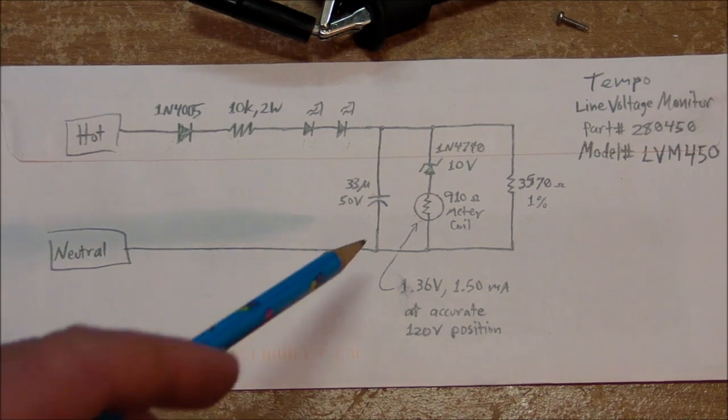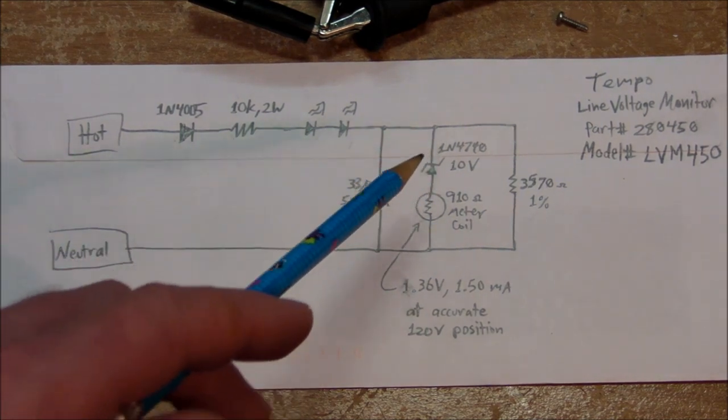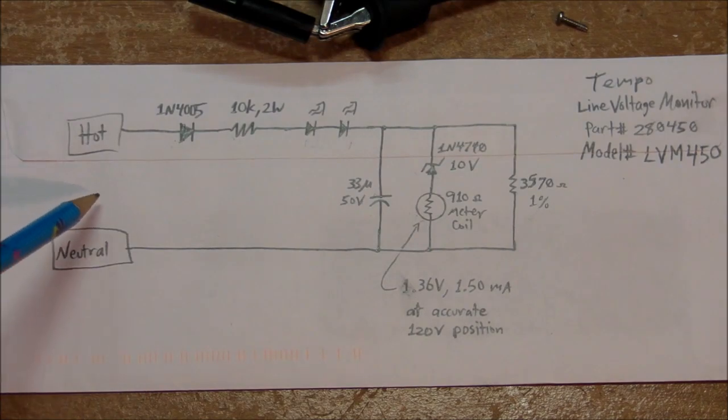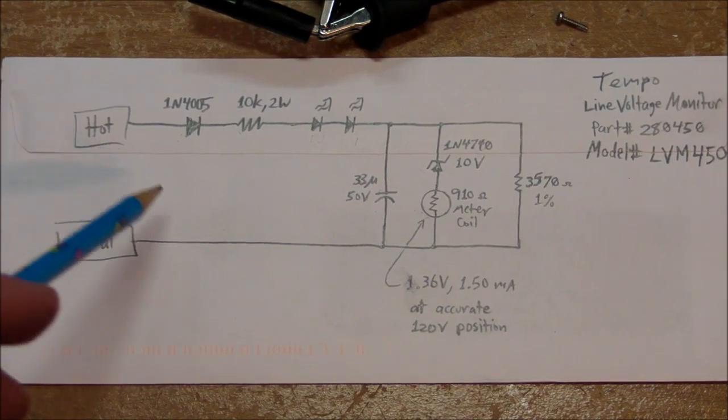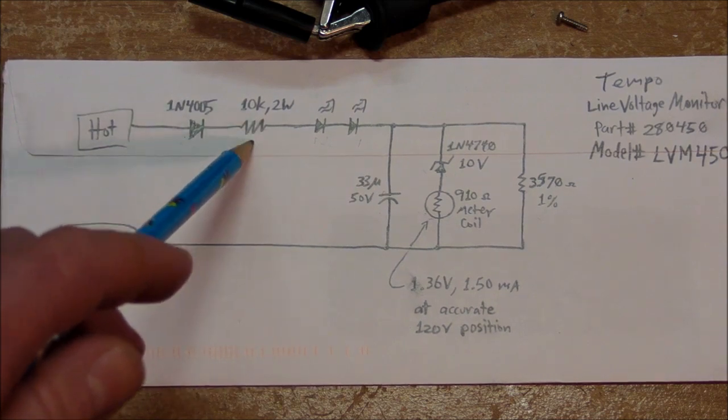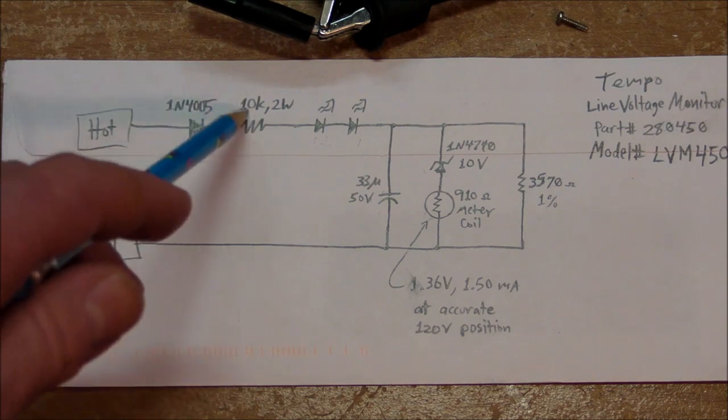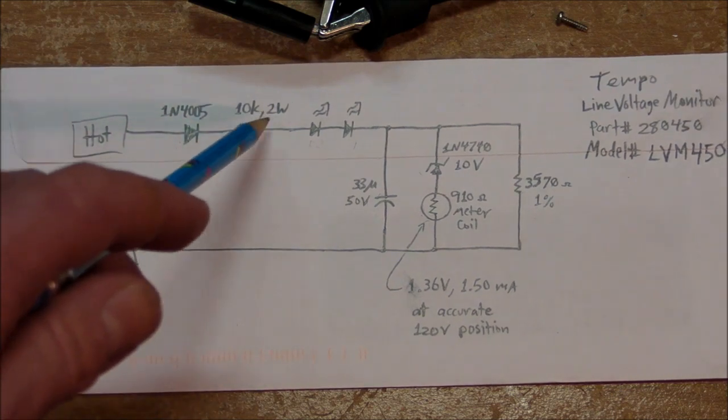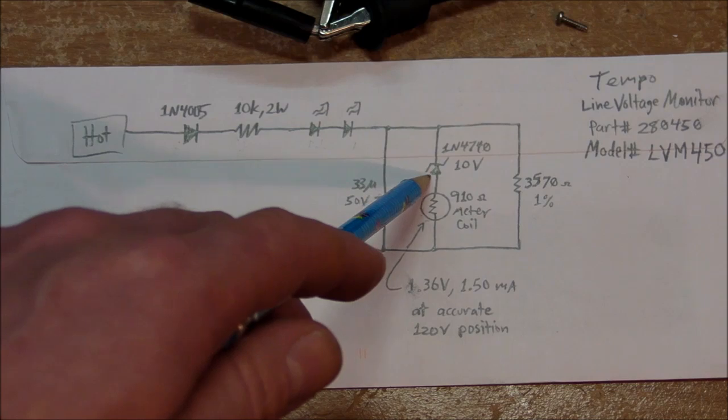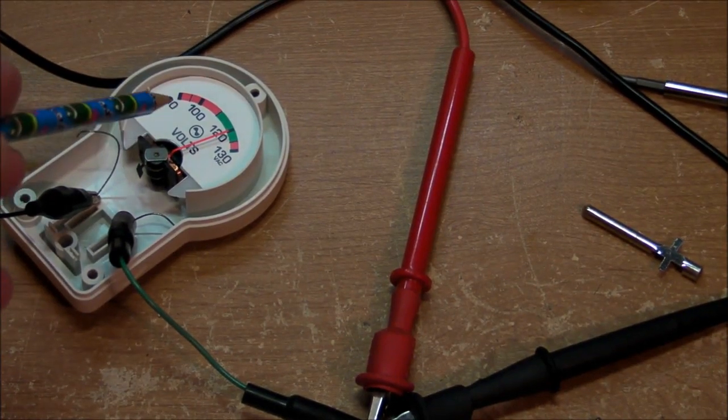Anyway, this zener diode doesn't have to have a very high voltage because most of the voltage drop coming from 120 volts over here is going to be on the 10K resistor right here. So this is going to be the primary limiting component in here. And then the zener rectifier is, again, quite necessary to actually achieve this linear scale on the thing.